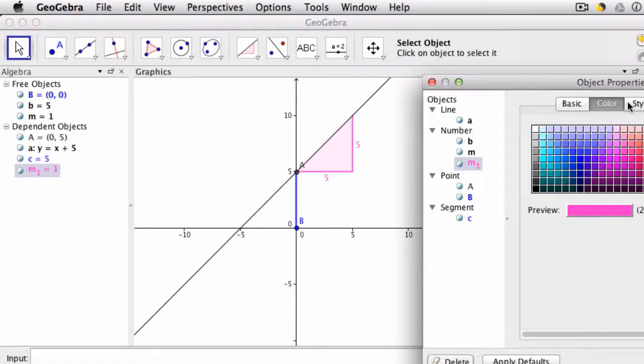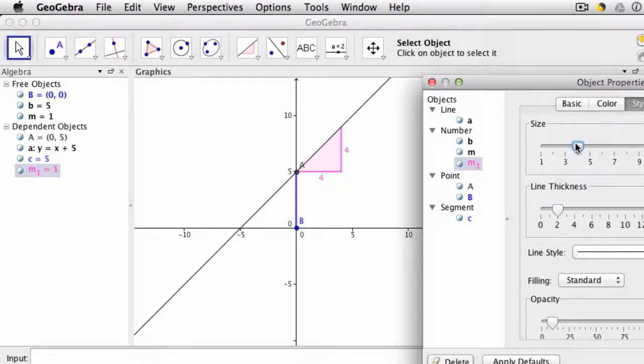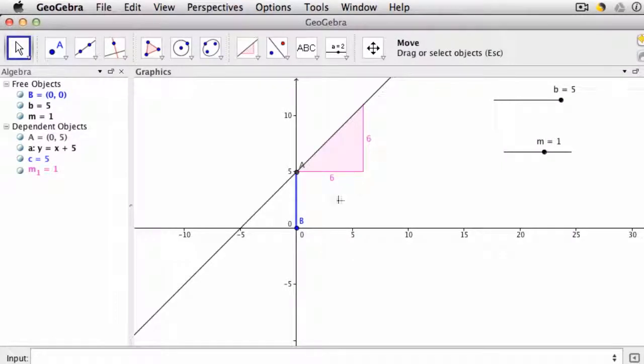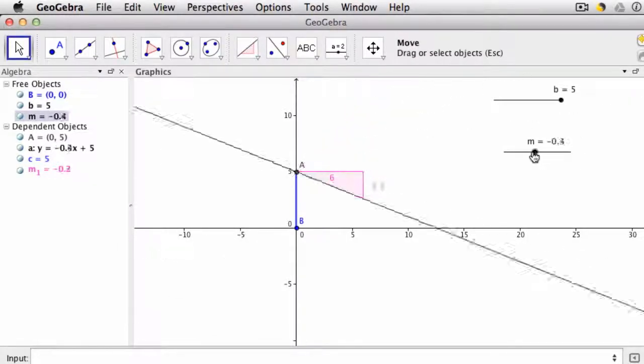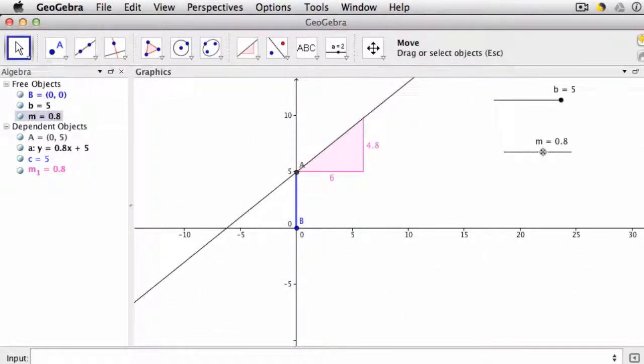You can ask why in this case are the numbers always the same in these triangles, right? And that might help them understand how slope can be written in different ways, as different fractions, and it can be written as long as the relationship is proportional. As they mess with the slider they can of course look at other things as well.